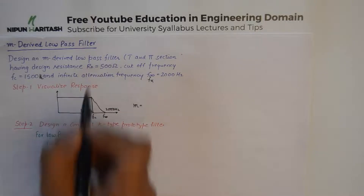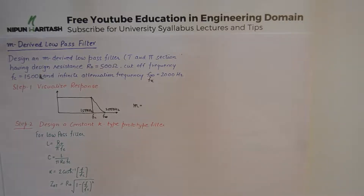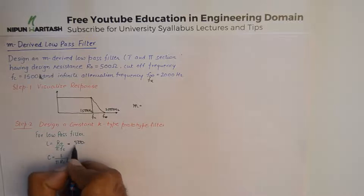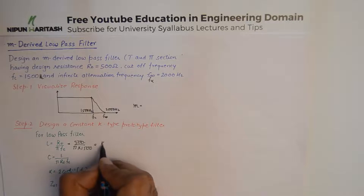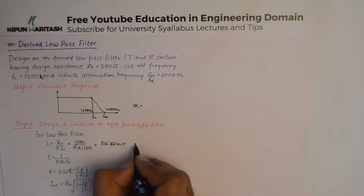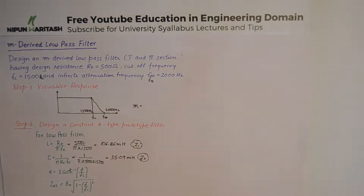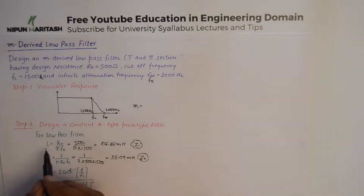With the design resistance R0 and FC, we can find the values of L and C, the two principal components. Substituting the values gives L = 500 divided by (π × 1500) = 106.86 millihenry, which is Z1, the series arm impedance for a low pass filter. C can likewise be calculated, along with other parameters for the constant K type low pass filter such as the T section and Pi section impedances.